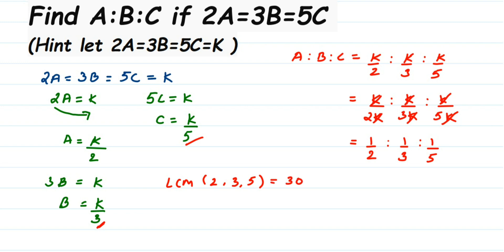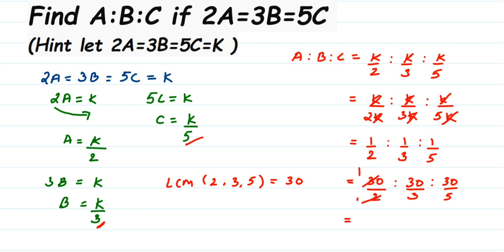LCM of 2, 3, and 5 is 30. Now I'm going to multiply the numerator of all the ratios by 30 — the same way I divided by K before to remove it. Multiplying gives 30/2 to 30/3 to 30/5. Cancelling: 30 divided by 2 is 15, 30 divided by 3 is 10, 30 divided by 5 is 6. So the ratio A to B to C is 15 to 10 to 6.